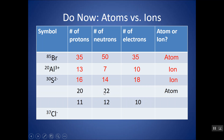Here, I'm given protons and neutrons, so I can add these together to get the mass number for the symbol, and I can use the protons to look up the element on the periodic table — it's calcium. I'm told it's an atom, so I don't have to write a charge, and therefore the number of electrons will be the same as the protons.